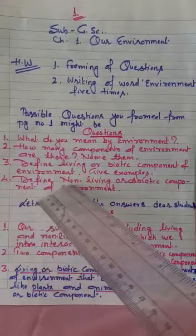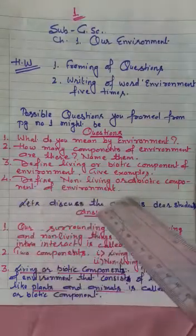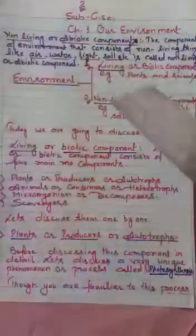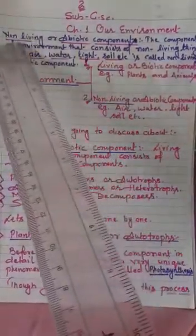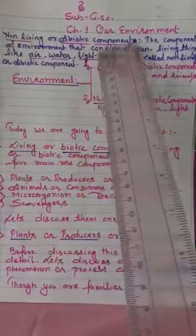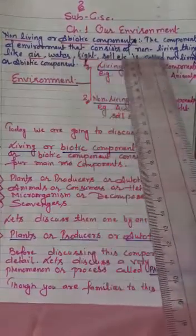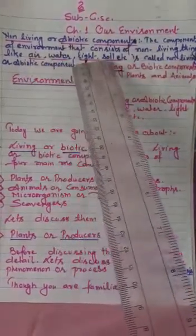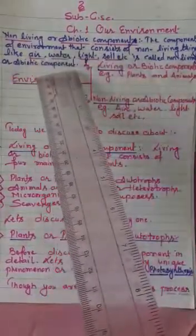The fourth question which can be made from page number one is: define the non-living or abiotic component of environment. You will put the heading 'Non-Living or Abiotic Component.' The component of environment that consists of non-living things like air, water, light, soil, etc. is called the non-living or abiotic component.